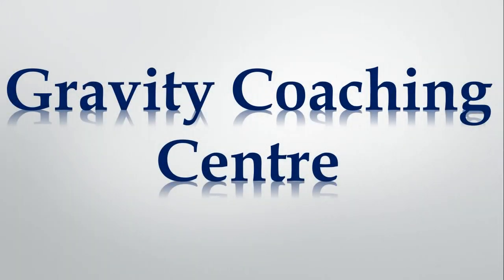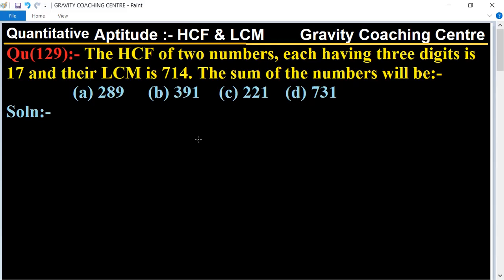Welcome to our channel Gravity Coaching Centre, quantitative aptitude chapter HCF and LCM, question number 129. The HCF of two numbers, each having three digits, is 17 and their LCM is 714. So the sum of the numbers will be what?